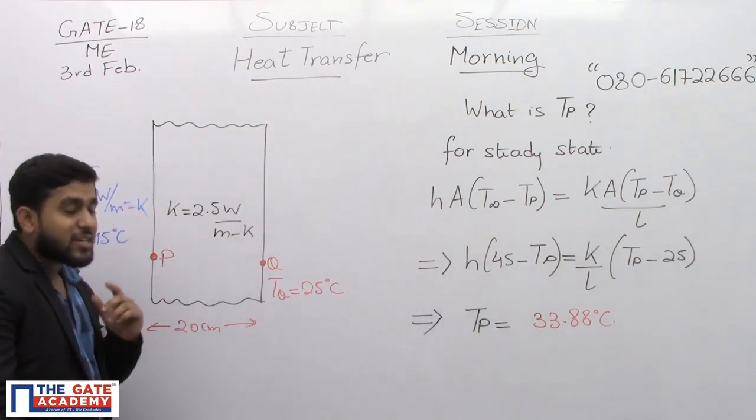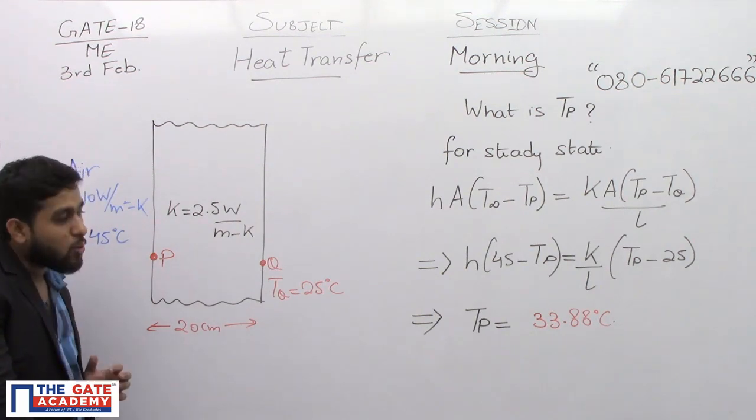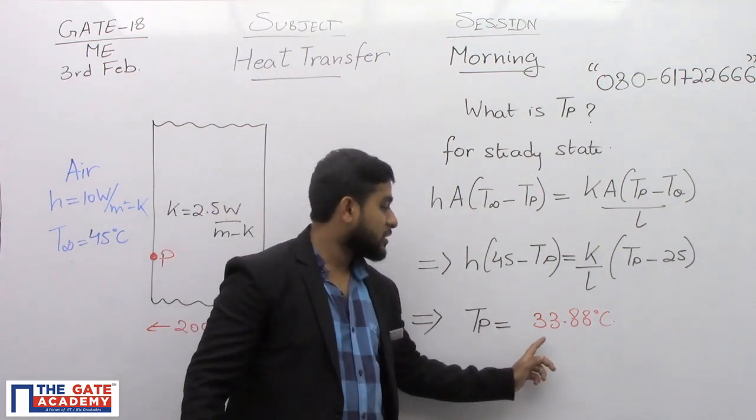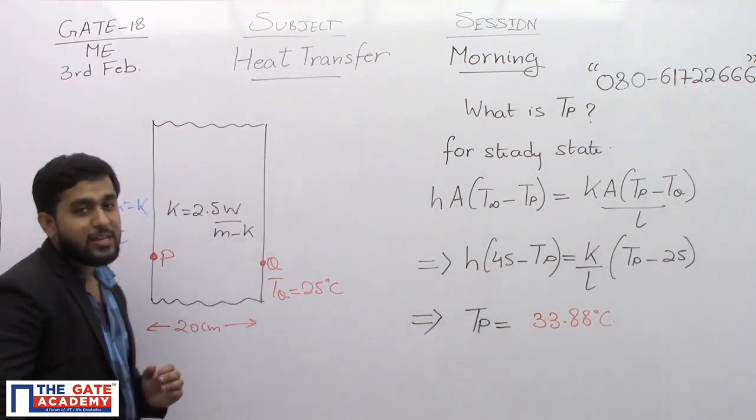In this equation only one is unknown, that is TP which we want to find out. When you substitute all the values here in SI you will get TP is equal to 33.88 degree Celsius.